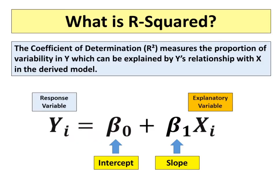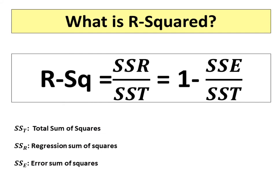Prior to explaining about adjusted R-squared, we need to understand the meaning of R-squared. What is R-squared? R-squared is also known as coefficient of determination. The coefficient of determination R-squared measures the proportion of variability in Y which can be explained by Y's relationship with X in the derived model. R-squared is the regression sum of squares divided by the total sum of squares, or 1 minus error sum of squares divided by total sum of squares.